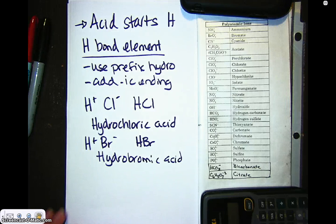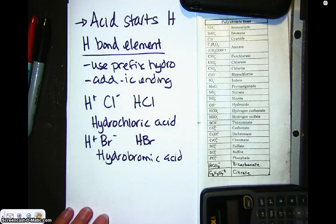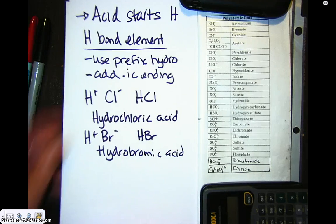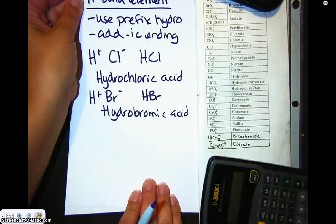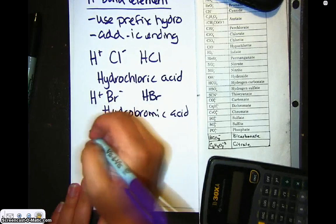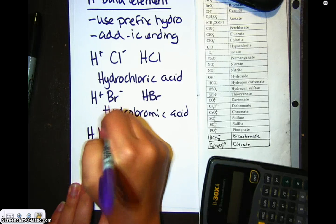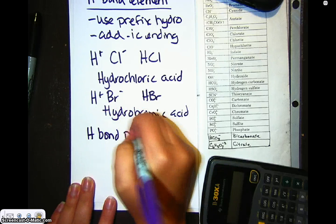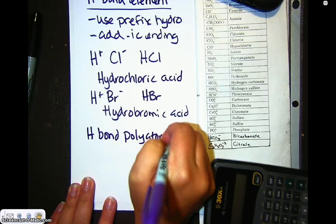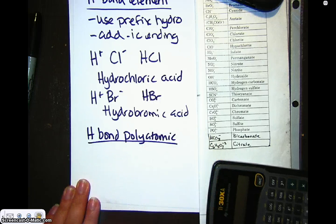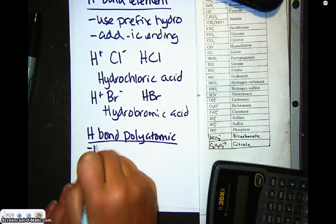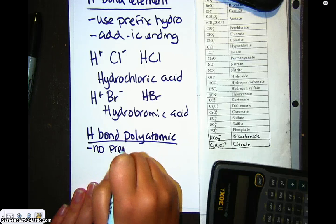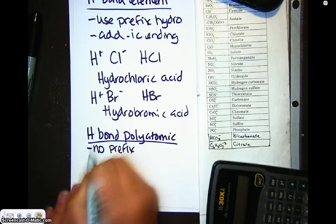Now we can also have hydrogen bonding with a polyatomic. When this is the case, we have no prefix. We just add -ic.